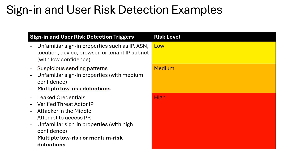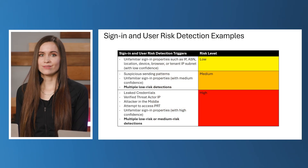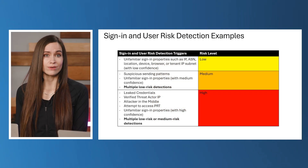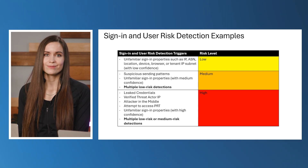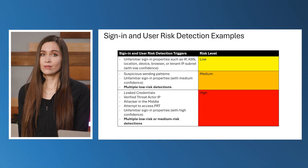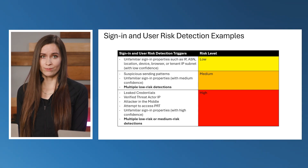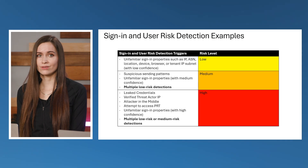High risk signifies high confidence that the account is compromised, including high threat signifiers such as leaked credentials or verified threat actor IP. Many detections can fire at one or more risk levels depending on the severity of the anomalies detected. For example, unfamiliar sign-in properties might fire at high, medium, or low based on the confidence in the signals or the frequency of the signals.